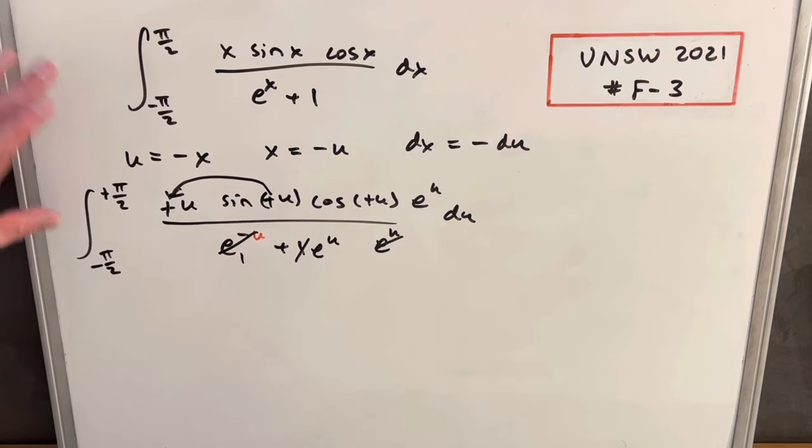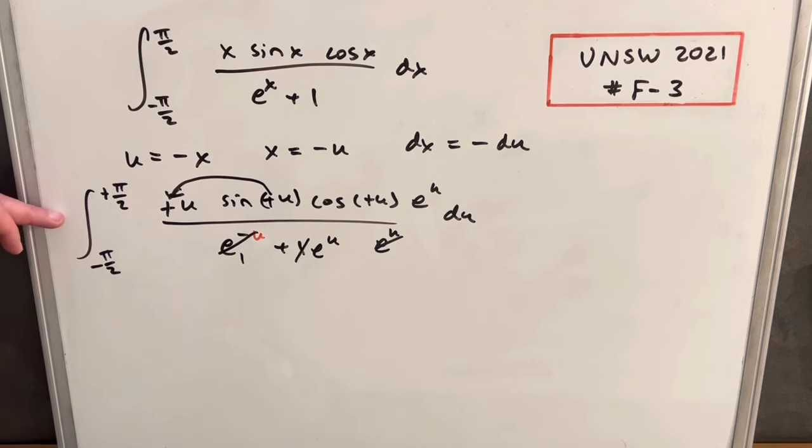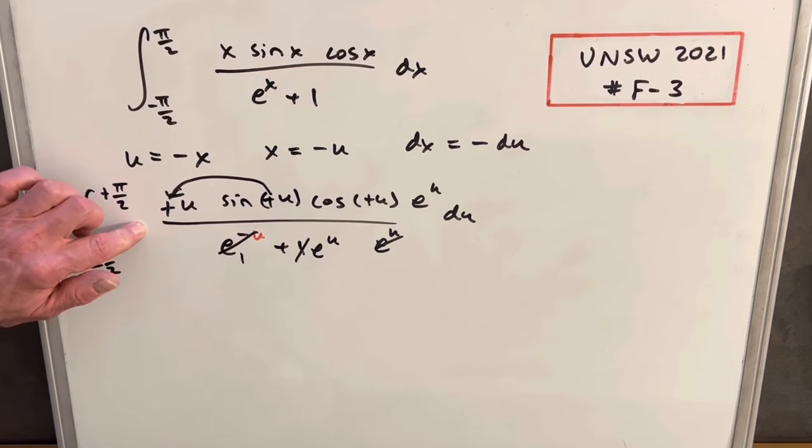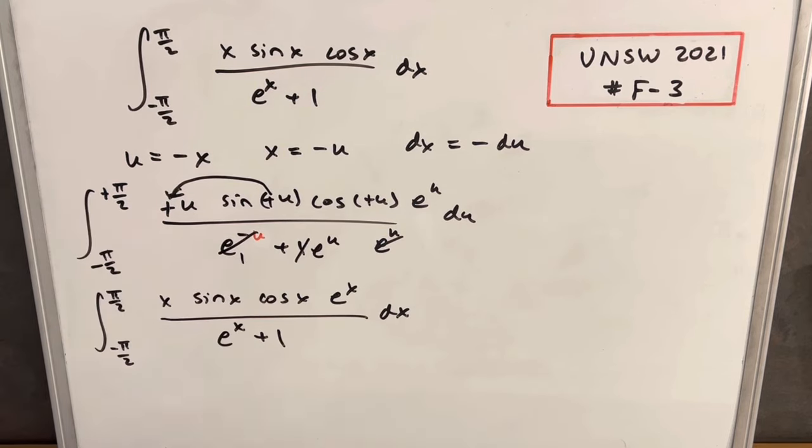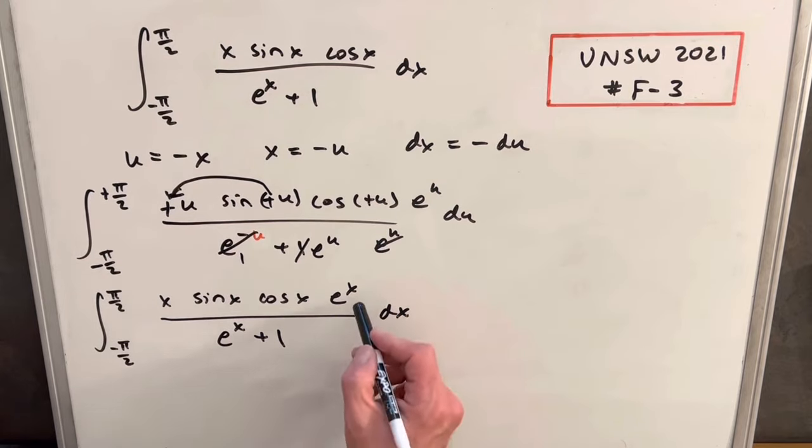Now from here, in order to use this symmetry, I want to combine these two somehow. So what I'm going to do is change this variable back to x. Because it's a definite integral, I can change the variable to whatever I want. Let me rewrite this in x and clean it up. This is shaping up. We have it where it looks very similar, we just have this e to the x.